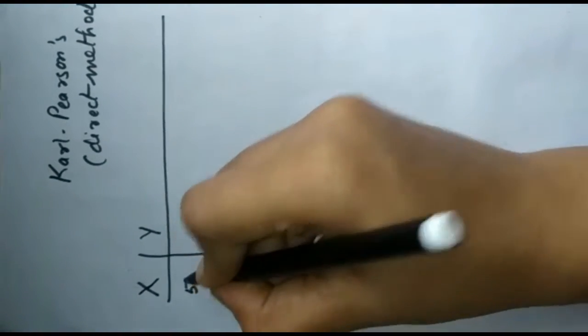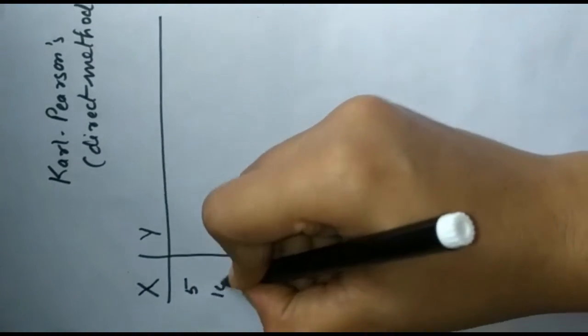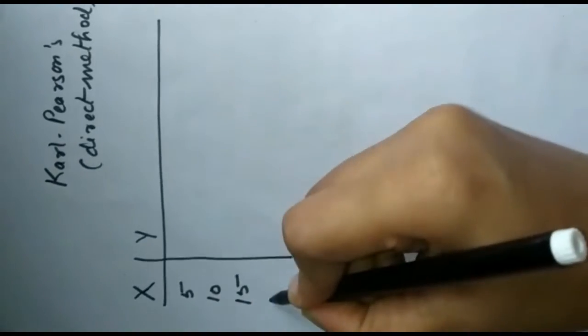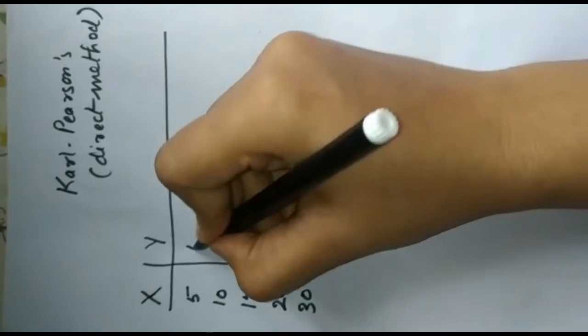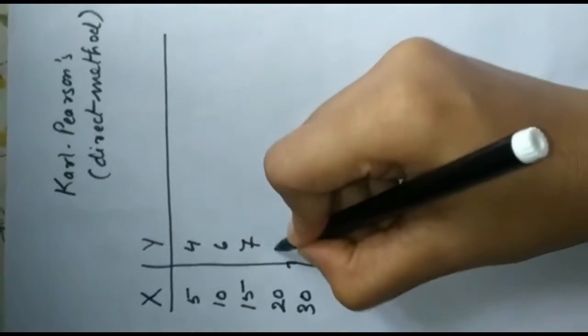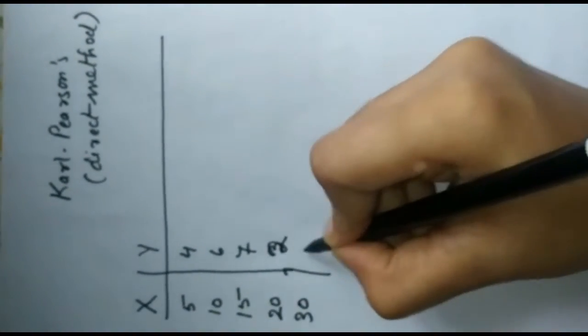X got in first test 5, second 10, then 15, then 20, and then 30. Y got 4, 6, 7, 2, and 1.